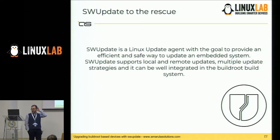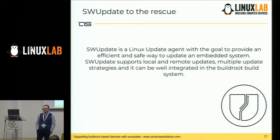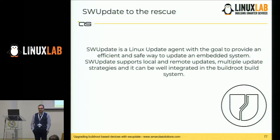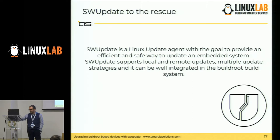SWUpdate is an update agent that you install in your embedded Linux distribution. This agent is responsible for updating the software on your embedded system. It doesn't do an 'apt update && apt upgrade' like on your desktop computer — instead it overrides the NAND or MMC with a new version of the software, doing it in a way that the system boots again after the update. If it doesn't boot, a fail-safe mechanism permits you to redo the update and stay consistent.